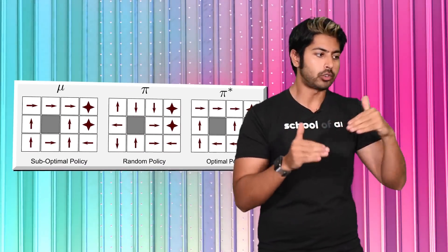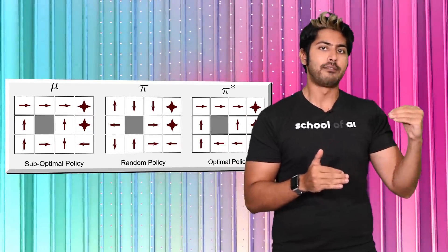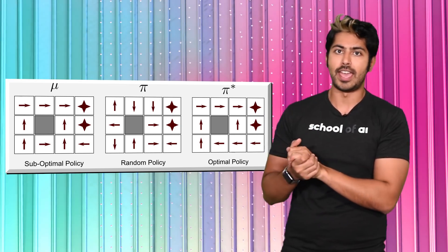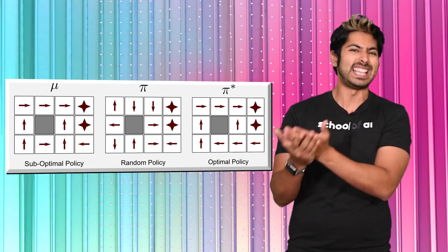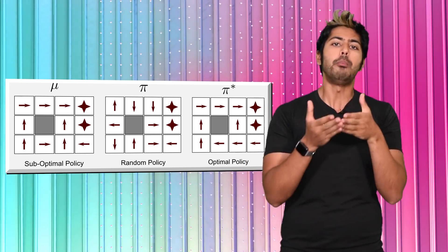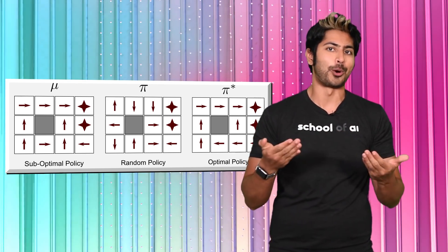Remember, policies are a mapping of the actions an agent takes from a particular state. For example, if at the end of a business day, if there are 13 and 17 iPhones in stores 1 and 2 respectively, how many iPhones should the agent move between stores?